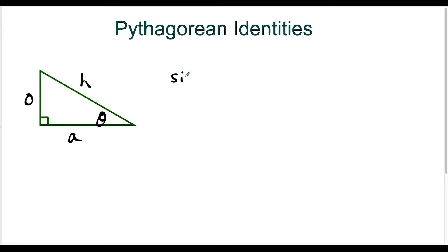So if I look at a few trig functions here, I'm gonna look at sine of theta is the ratio of the side opposite to the hypotenuse and cosine of theta is the ratio of the side adjacent to the hypotenuse.